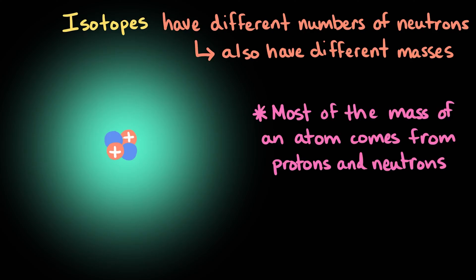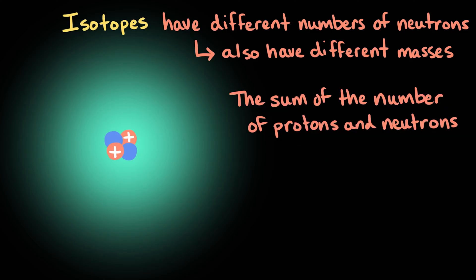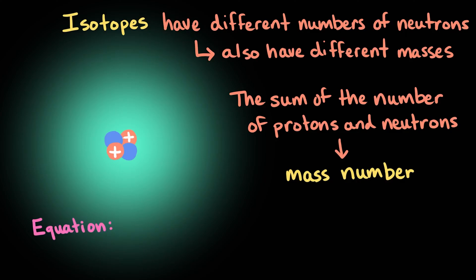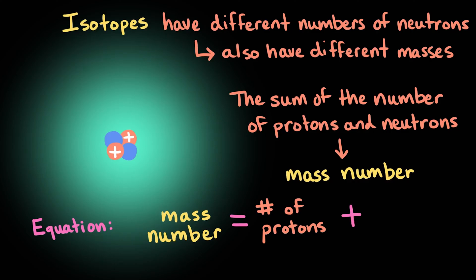Remember, most of the mass of an atom comes from the protons and neutrons in its nucleus. In fact, the sum of the number of protons and neutrons in an atom is called its mass number. We can write this in the form of an equation: mass number equals the number of protons plus the number of neutrons.